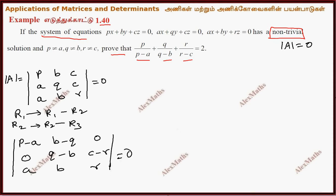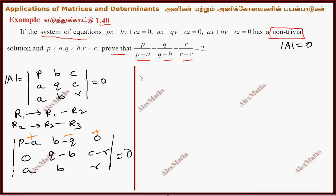Now we need the expansion. First row expand, following the same sign convention. So the elements are plus, minus, plus with the same convention. The first element is P minus A.